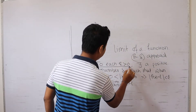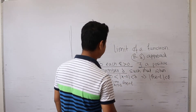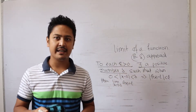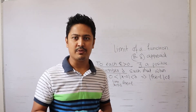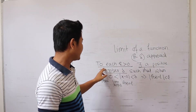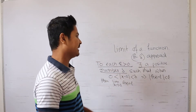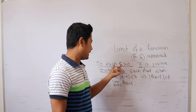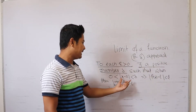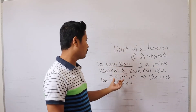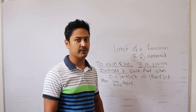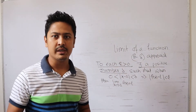To each epsilon greater than 0, there exists a positive number delta. We have to understand that the connection of epsilon is related to delta. We can find a positive delta and set up the inequality: mod of x minus a less than delta and greater than 0. This implies mod of f of x minus l is less than epsilon, and then limit x approaches to a of f of x equals l.